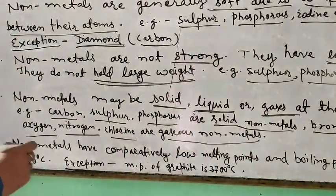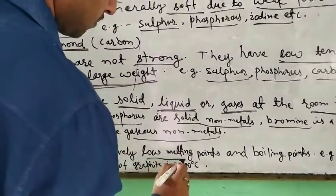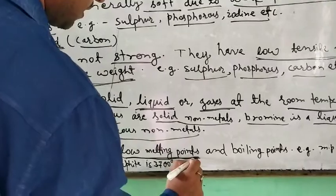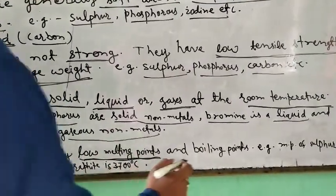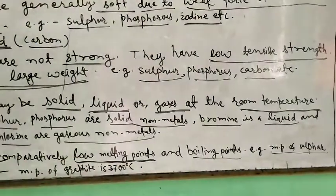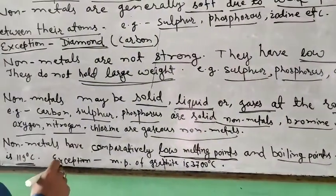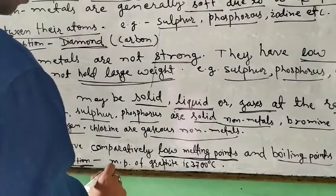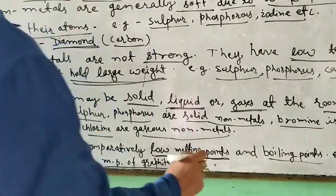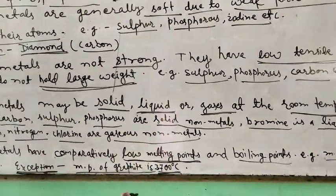Another point is that non-metals have comparatively low melting and boiling points compared to metals. For example, the melting point of sulfur is 190 degrees Celsius. The only exception is graphite, whose melting point is 3700 degrees Celsius, which is very large.